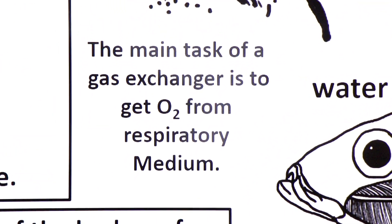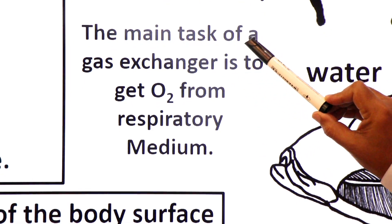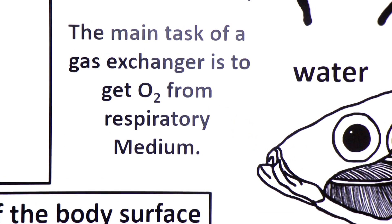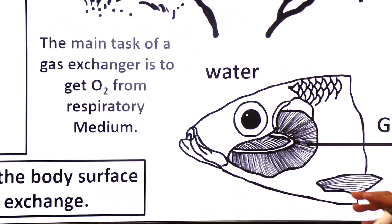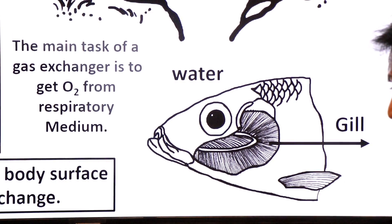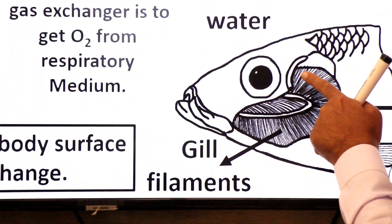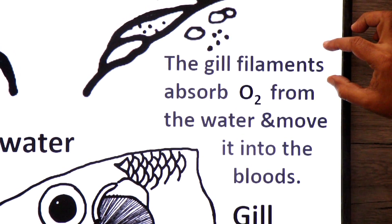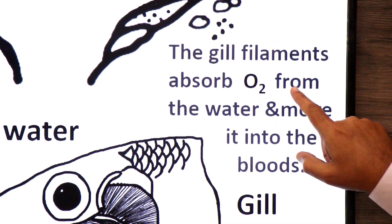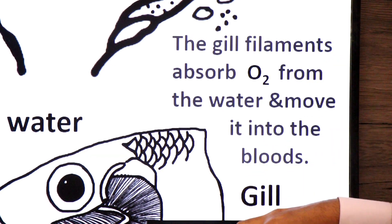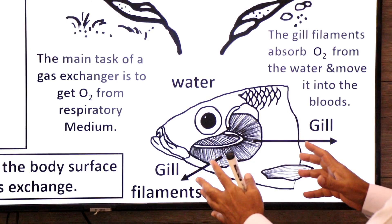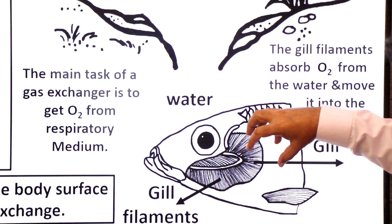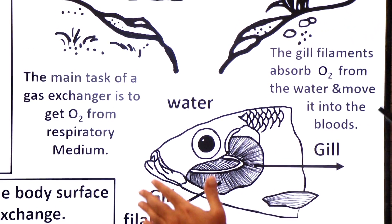The main task of a gas exchanger is to get oxygen, molecular oxygen, from the respiratory medium. So how will the fish obtain oxygen? Its respiratory medium is water. So dear students, through the gill, through the gill filaments. Here you see a gill is made up of gill filaments, many gill filaments. And dear students, the gill filaments absorb oxygen from the water and move it into the blood. The oxygen that fishes obtain from water is through gill filaments. You see the water over the gill filaments - the dissolved oxygen will dissolve into blood capillaries.